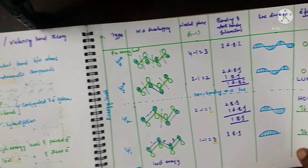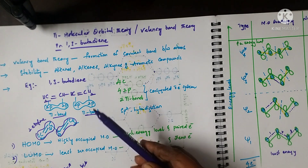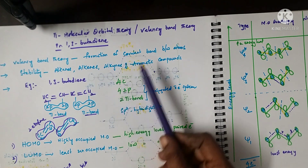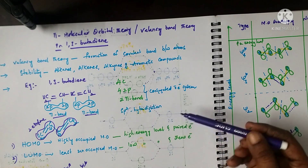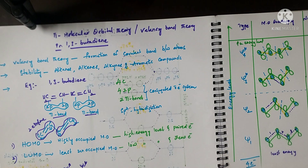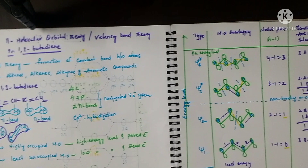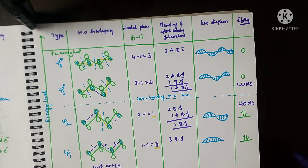This concludes the discussion of pi molecular orbital theory and valence bond theory in 1,3-butadiene. We have covered: the definition and use of valence bond theory; the structural organization of 1,3-butadiene; the meaning of conjugated pi electron system; the types of molecular orbitals based on electron filling and overlapping; the representation of molecular orbital overlapping; the bonding and anti-bonding interactions and nodal planes in each orbital; and the status of HOMO and LUMO among the bonding and anti-bonding molecular orbitals.